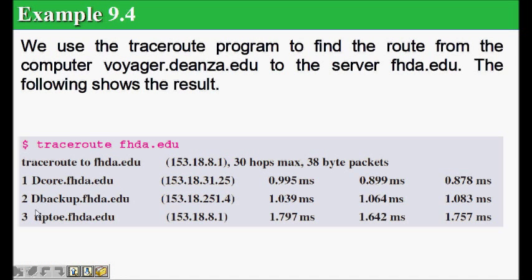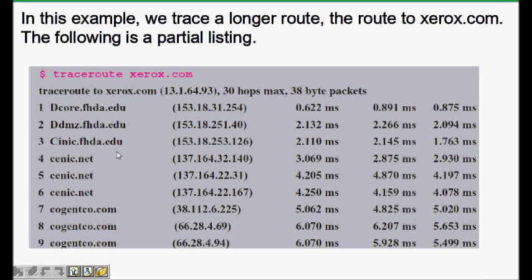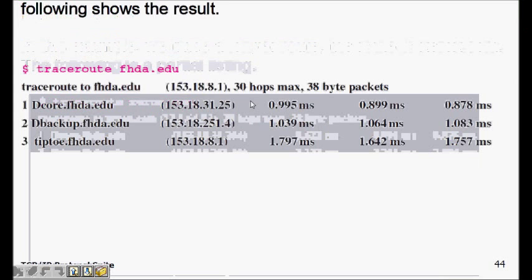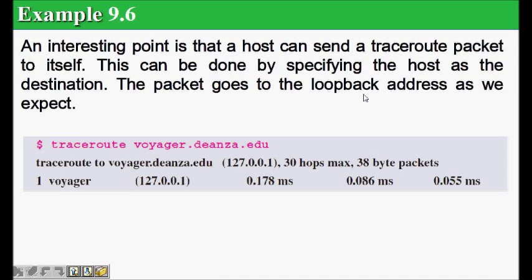In a traceroute example to fhda.edu, there are just three hops: d-core.fhda.edu, d-backup.fhda.edu, and tiptoe.fhda.edu. A longer path example to xerox.com shows nine routers in the path, each identified by IP address, hostname, and round trip times reported in milliseconds — showing minimum, average, and maximum round trip times per hop.